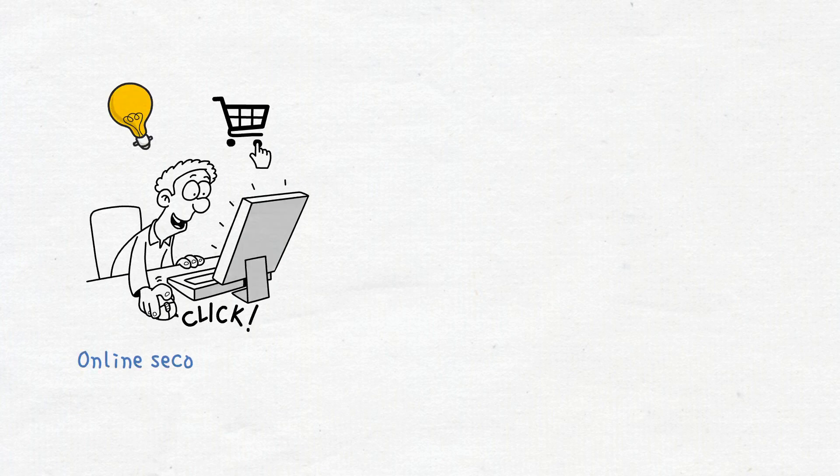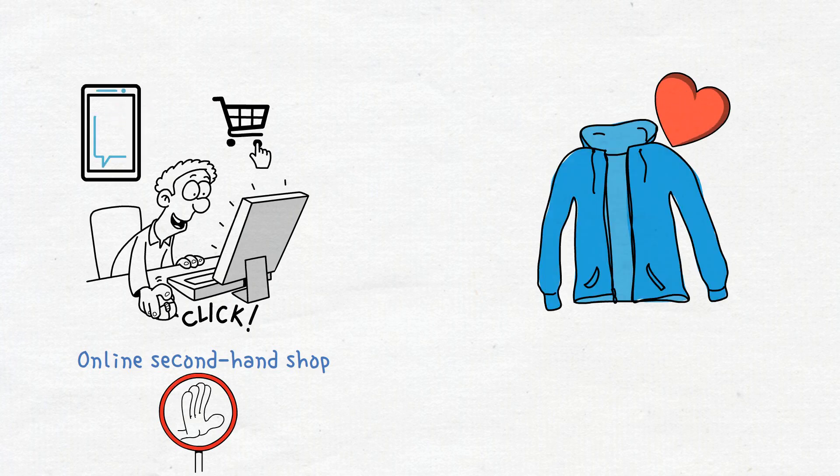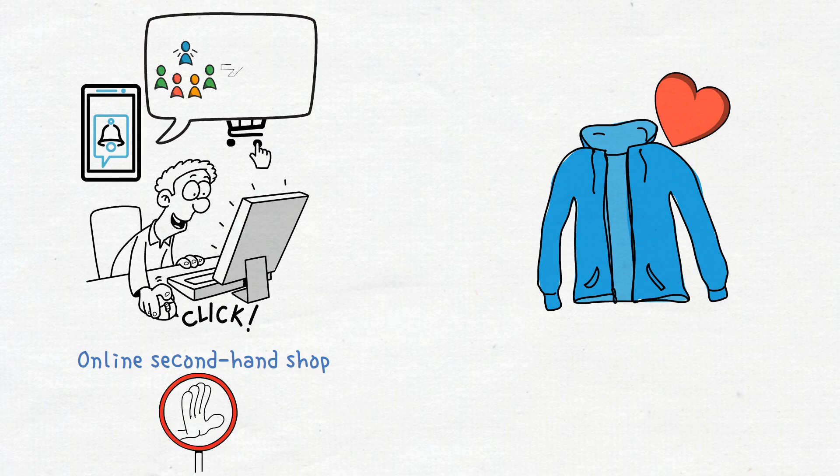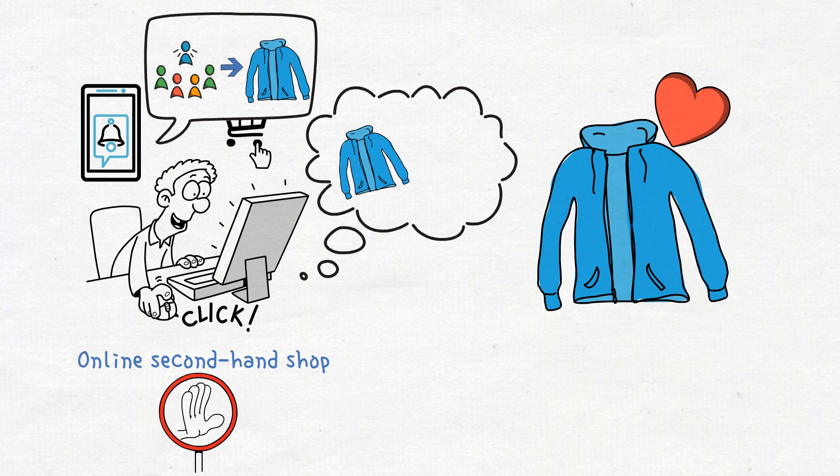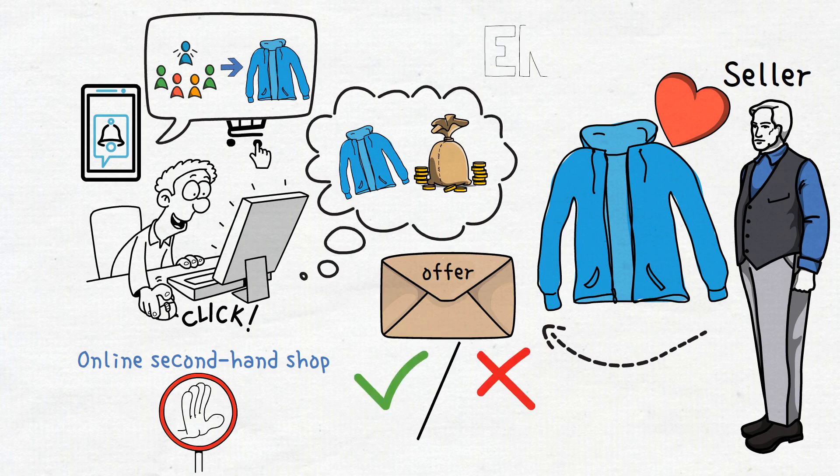To understand this process better, you can think of it as shopping at an online second-hand shop. It is not how it works in practice, but imagine that you hearted a sweater. One day, you get a notification saying that 5 other people are also considering buying it. So, now you have to contemplate, do you really want the sweater? How much are you willing to pay? Finally, you submit your offer and wait for the seller's answer. That's rather similar to acquiring an ENS domain.